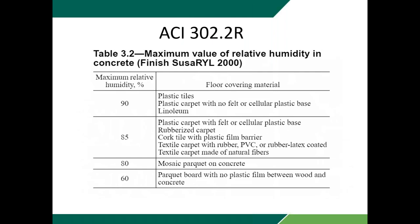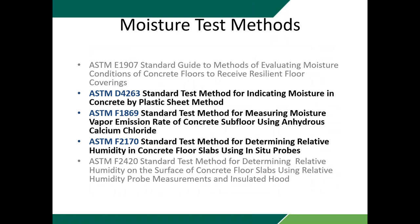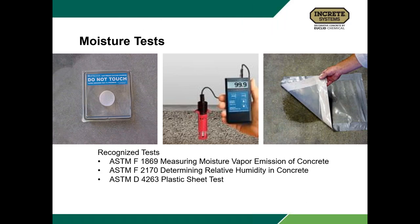ACI 302.2R also provides charts on relative humidity — actually measuring the humidity level in the concrete itself. Most manufacturers today call for 70 to 75 percent relative humidity. You should look at whatever the manufacturer's limitations are and include that in your specifications. There are multiple moisture test methods out there — probably the three most popular are the calcium chloride test, the relative humidity test, and the plastic sheet test, each governed by their respective ASTM standards.